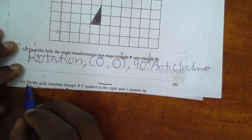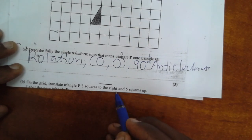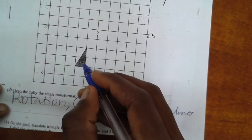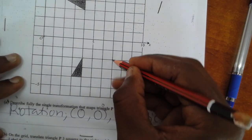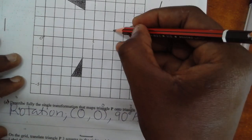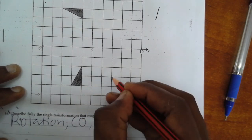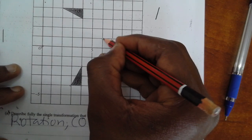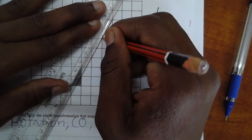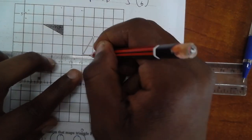Part b: on the grid, translate triangle P three squares to the right and five squares up. I take one corner, move one two three to the right, then one two three four five steps up — I get that position. I do the same to the remaining corners: each one moves three right and five up. Now I have translated object P to its new image position.